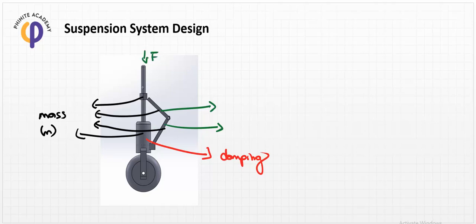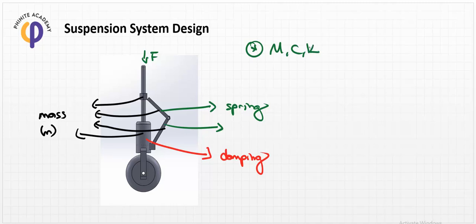If we apply force F in this direction, the spring factor or this rod can store the energy of that force value with the x dimension, or the deflection dimension. This can be considered as the spring coefficient of the system, and we should find all of these system parameters.